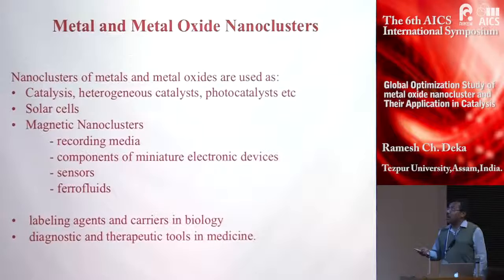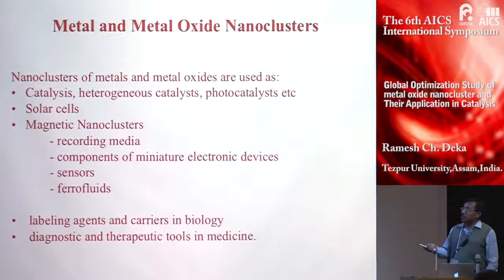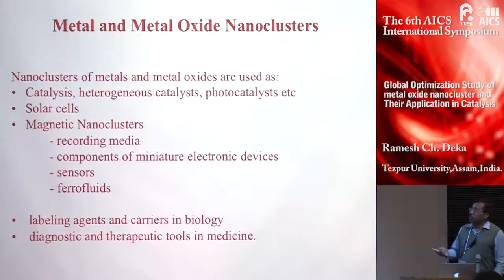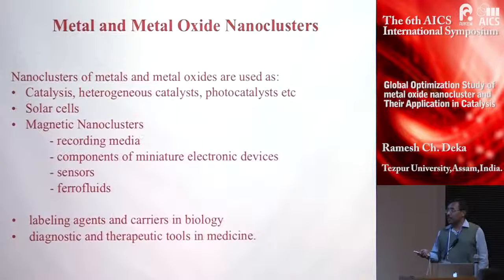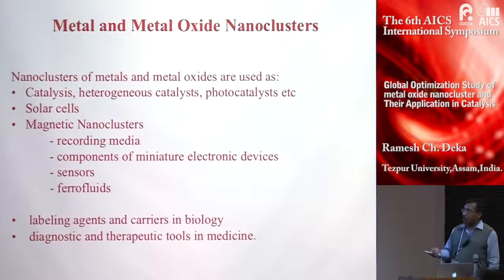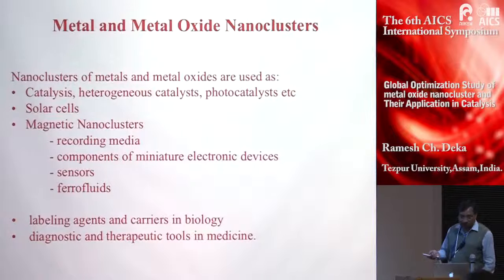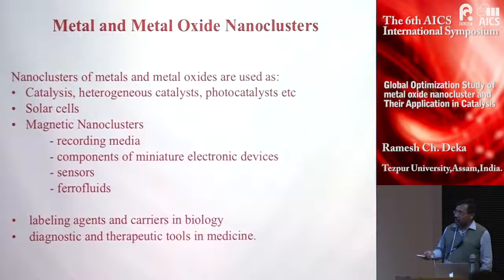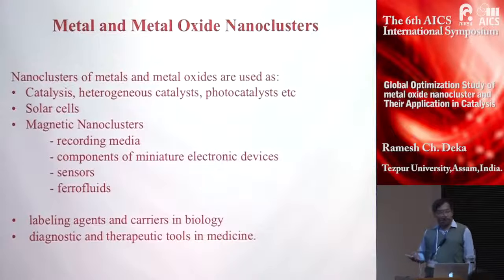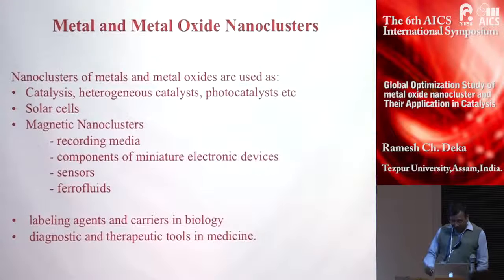Now I will talk about metals and metal oxide nanoclusters and why they are important. Nanoclusters of metals and metal oxides are very useful in chemistry as catalysts — they can be used as heterogeneous catalysts or photocatalysts. They can be used in solar cells and have magnetic properties, finding application in recording media and manufacture of electronic devices. They can be used as sensors, in ferrofluids, and also as labeling agents and carriers in biology, and for controlled release of drug delivery.